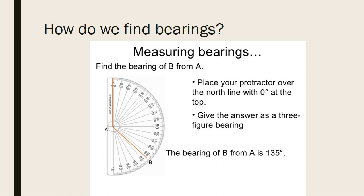By following along the protractor, you come down and around to reach your point. The angle at which B is located from A — so the bearing of B from A — is 135 degrees.